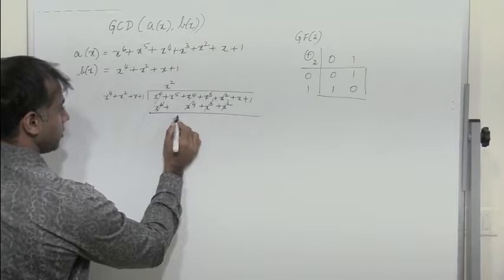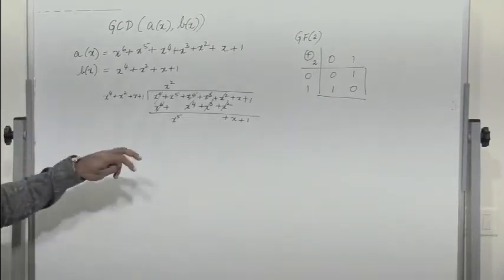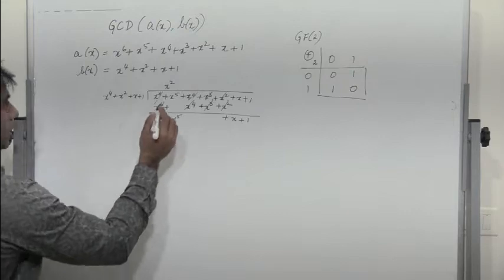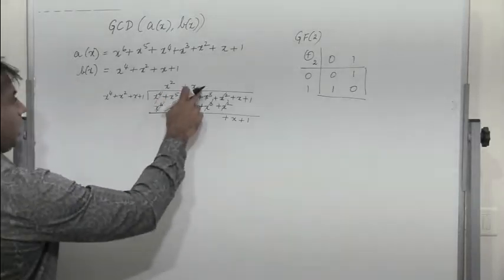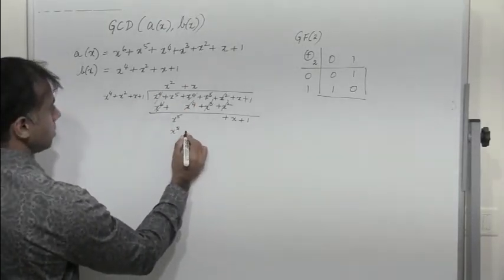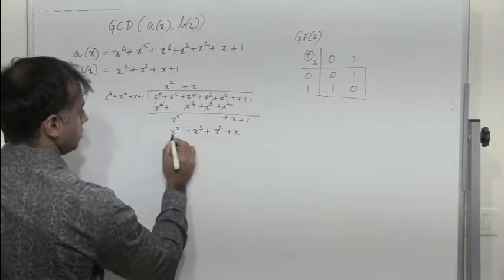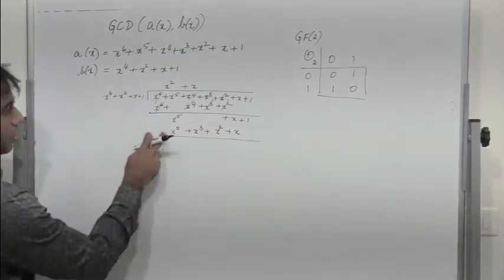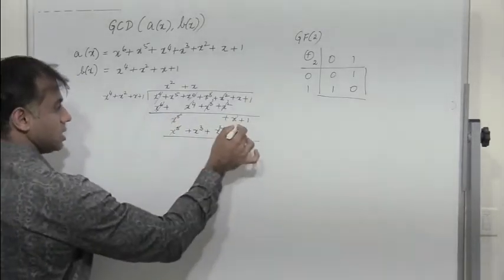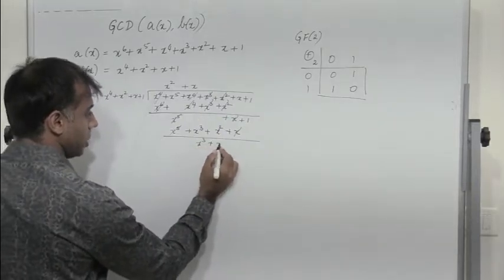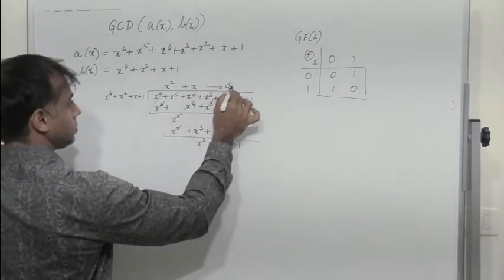I am left with x⁵ + x + 1. Since x⁵ has degree higher than x⁴ of B of x, I also multiply B of x by x to get x⁵ + x³ + x² + x. Writing powers one below the other for easy cancellation: x⁵ and x cancel, leaving x³ + x² + 1. So the quotient is x² + x and the remainder is x³ + x² + 1.